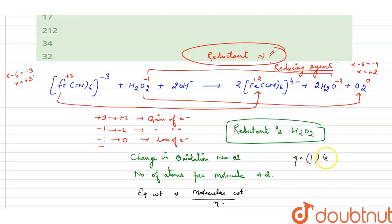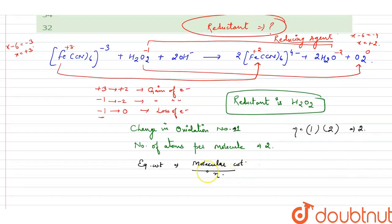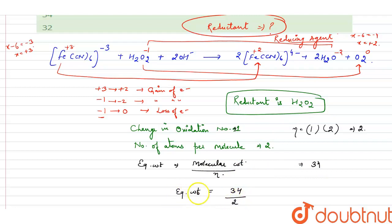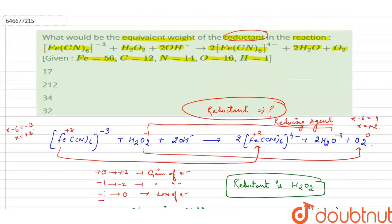The equivalent weight equals molecular weight divided by the n-factor. The molecular weight of H₂O₂ is 34. So equivalent weight = 34 ÷ 2 = 17. The answer is 17, which corresponds to option A.